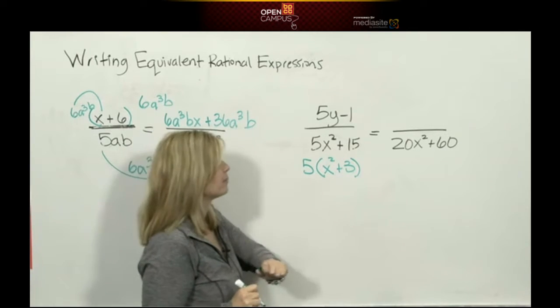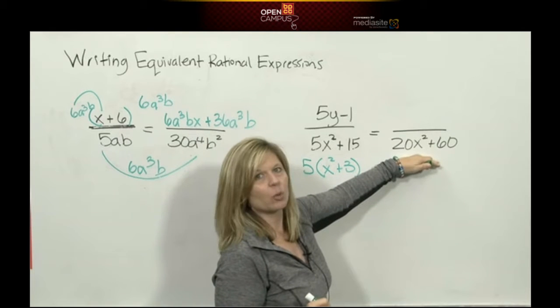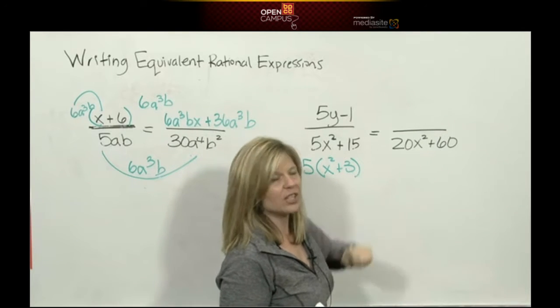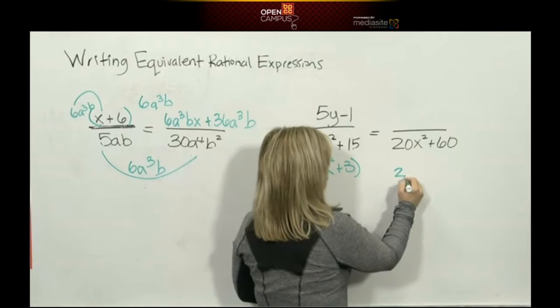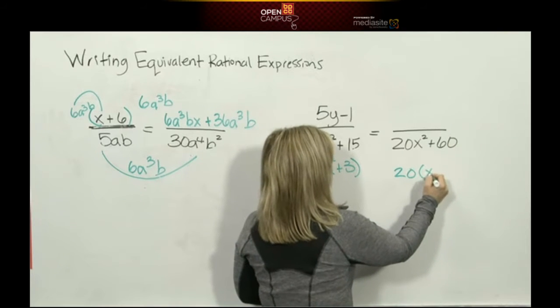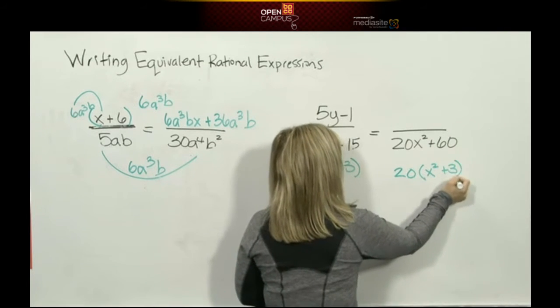So that's really what your original denominator is. If I have 20x²+60, what's my GCF? That's right, the largest number is 20, and that would leave x²+3.